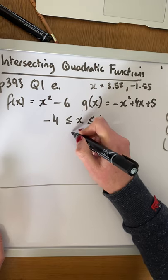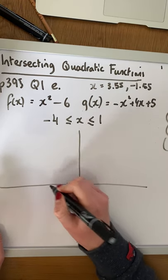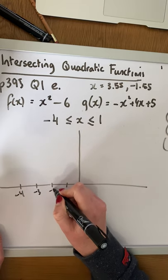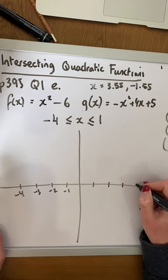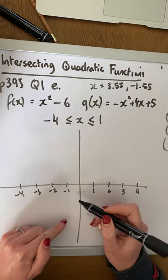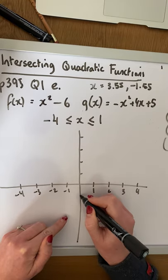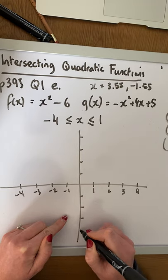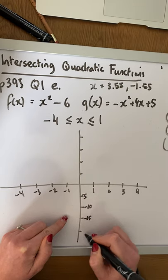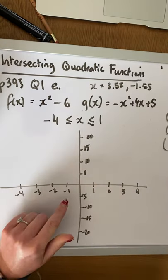Now, obviously, on paper, you'll be able to draw this a bit more accurately. So we have 5, 10, 15, 20. 5, 10, 15, 20.